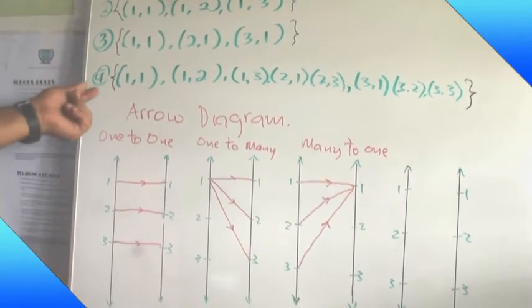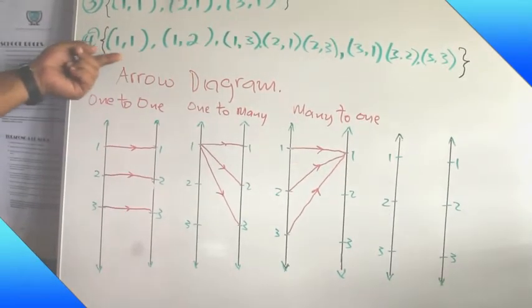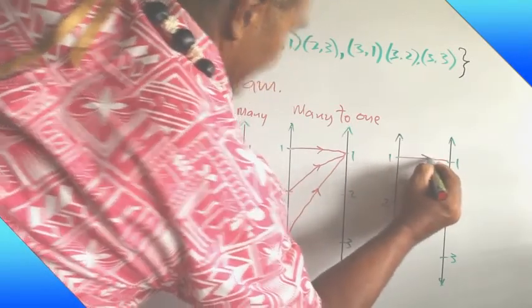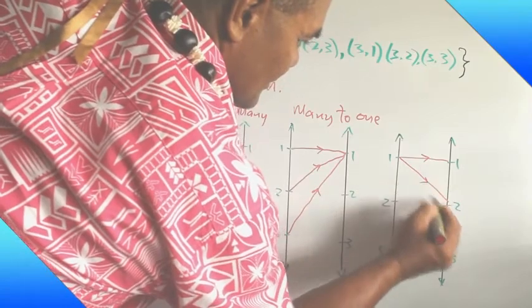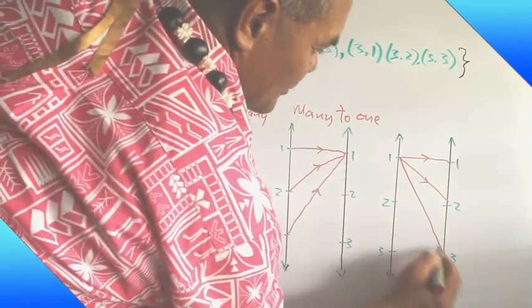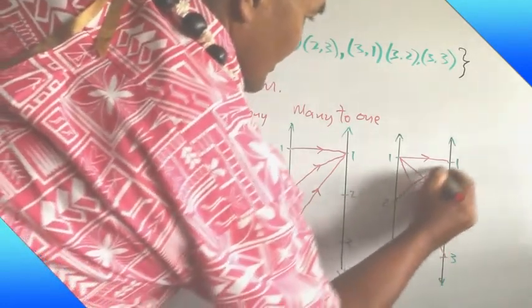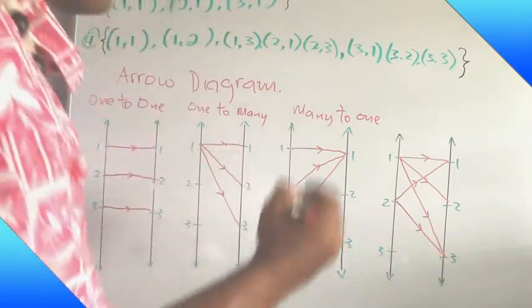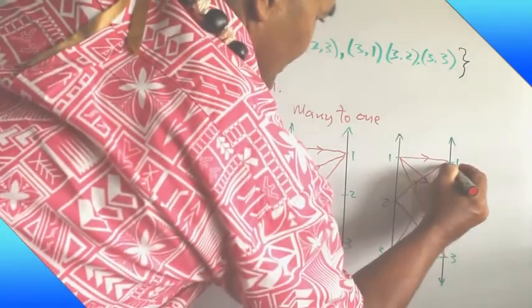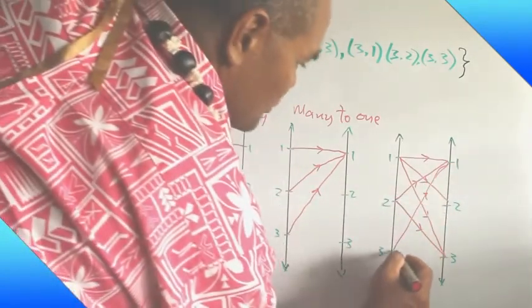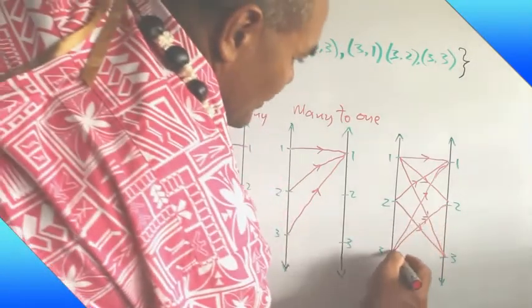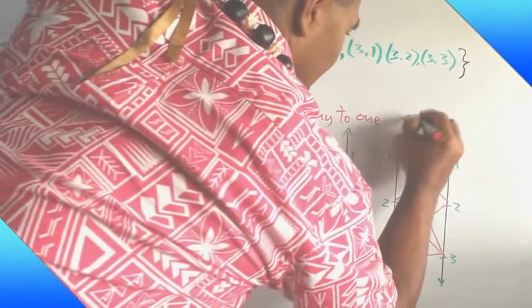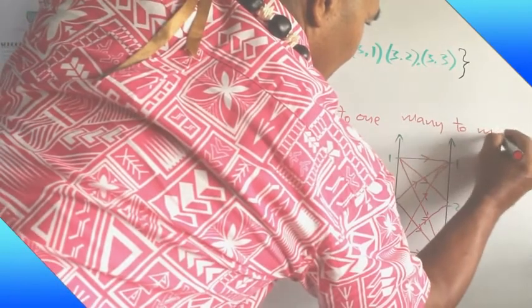Then the last one, you can see that this column set for the pairs here. So you can use diagram to represent this one: one one, one two, one three. The next one is two one, two two, two three. And three one, three two, and the last one is three three. So the special name for this arrow diagram is a relation of many to many relation.